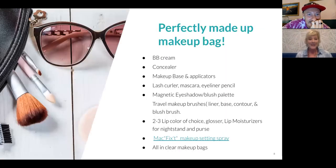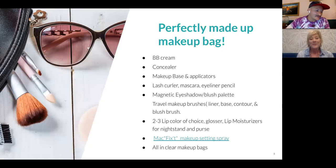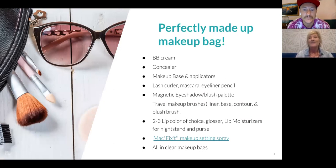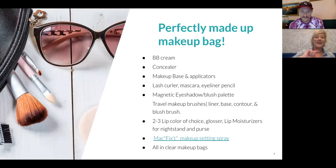The perfect makeup bag is very short and sweet. BB cream — a lot of times you don't want much makeup on at all, but if you do, just a little BB cream and head out the door. Concealer is very important for anybody over 25. Makeup bases, your specific applicators, a lash curler, mascara, and eyeliner. If I were going to have only a few things, it would be a lash curler, mascara, eyeliner, and lip — and that would be all.